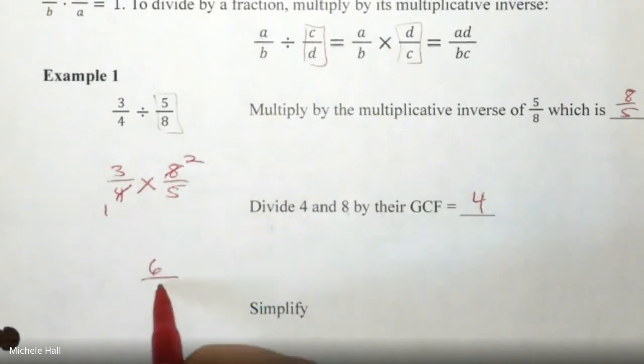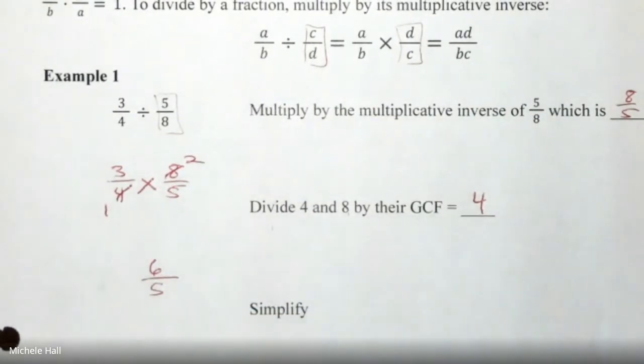One times five is five. And again, you can leave it improper - if I change it to a mixed number and I get it wrong, I have to take points off. So there you go, dividing fractions.